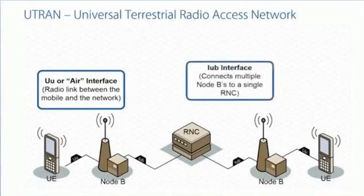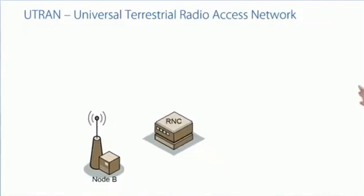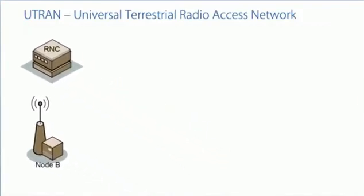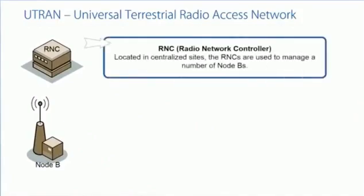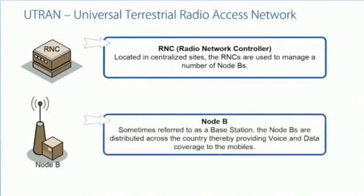The Node Bs and RNCs are connected using the IUB interface. The RNC will look after lots of Node Bs. So the mobile, when it comes onto the system, is actually wanting to talk to the RNC, not the Node B. The Node B is more of a relay, but it handles the air interface.